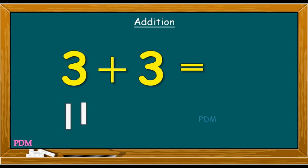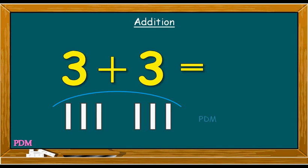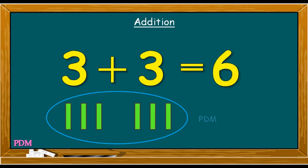Three plus three. The first set of lines stands for three and the second set of lines stands for three. When we add them both together, the sum comes one, two, three, four, five, six. Three plus three is equal to six.